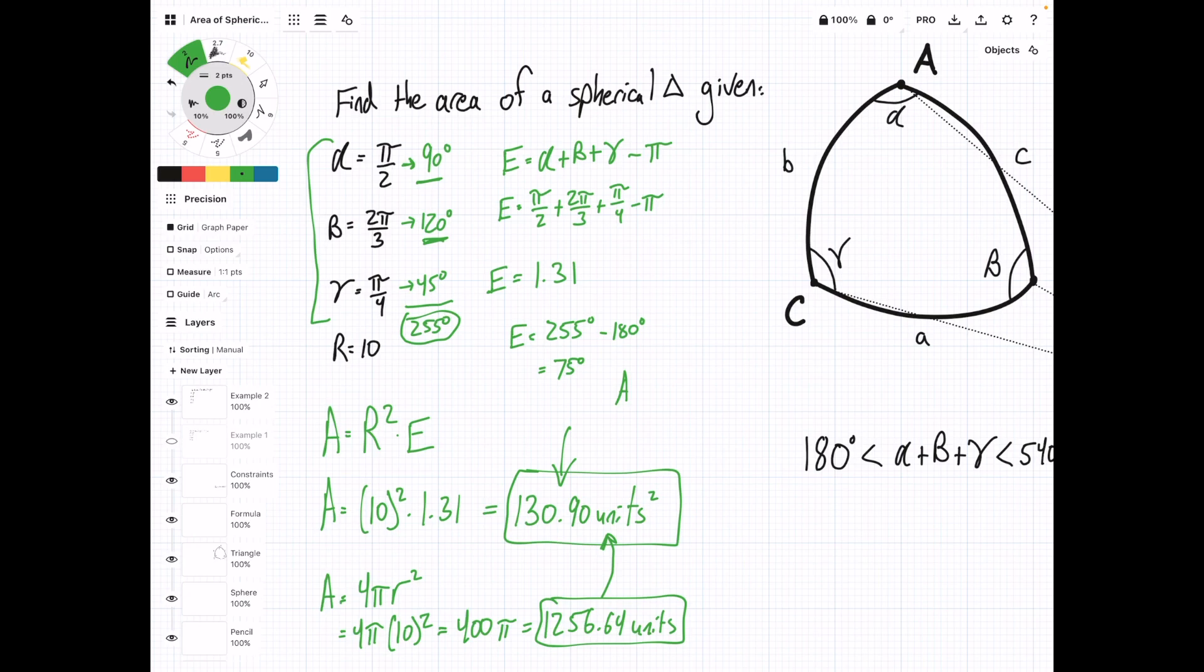And then we can solve this area equation again, using that conversion factor. R squared times E times pi over 180. This is going to be 100 times 75 degrees times pi over 180 degrees. 100 times 75 times pi divided by 180, and this gives us 130.9. Same thing, just a way to double-check what you got.